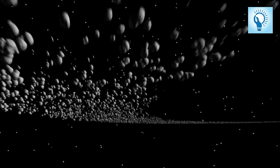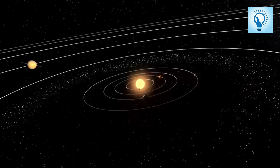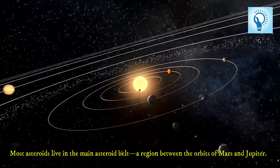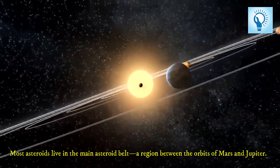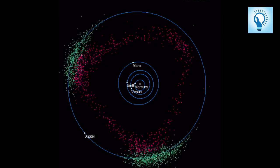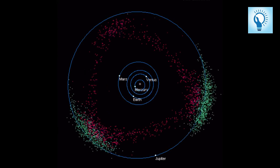There are lots of asteroids in our solar system. Most of them live in the main asteroid belt, a region between the orbits of the red planet Mars and the giant Jupiter.